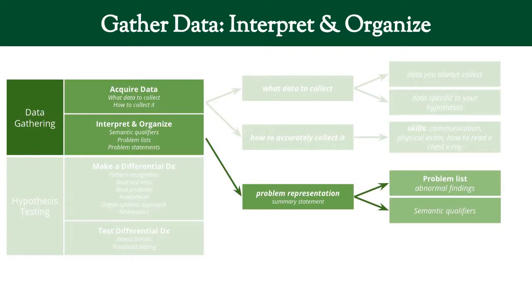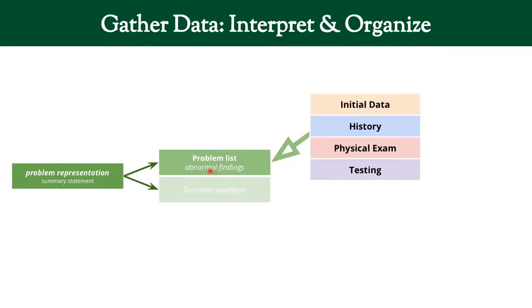Now let's move on to the second part: interpret and organize. You're going to end up with a problem representation, which has two components — the problem list and semantic qualifiers. A problem list is any abnormal finding from your different data sources: a high blood pressure, something abnormal in the history like chest pain, or something abnormal in physical or testing.